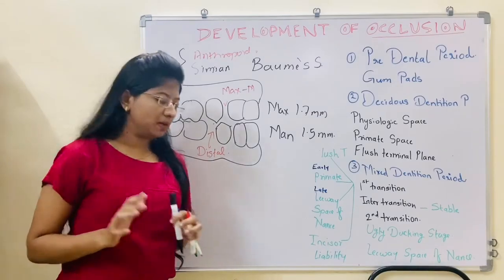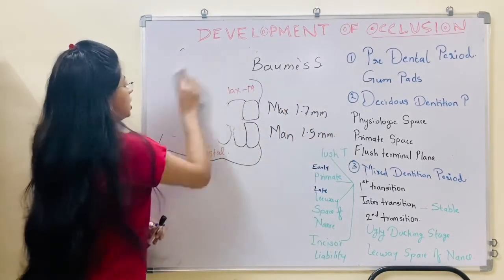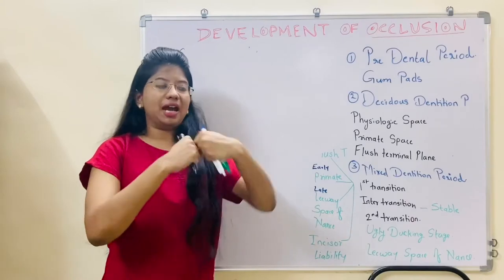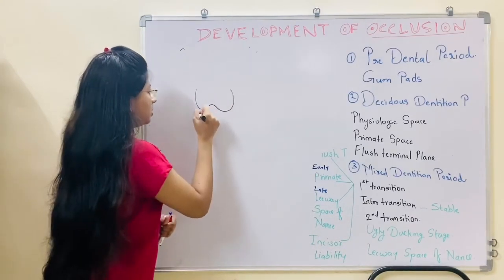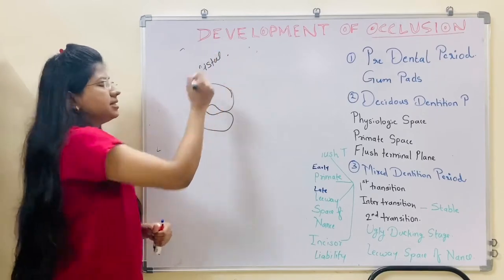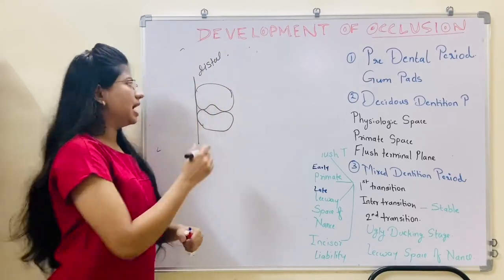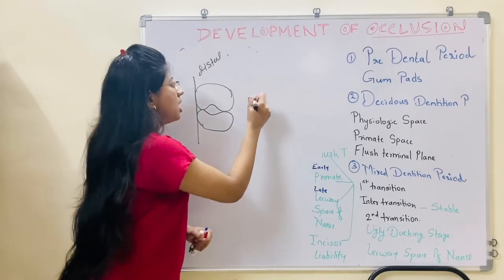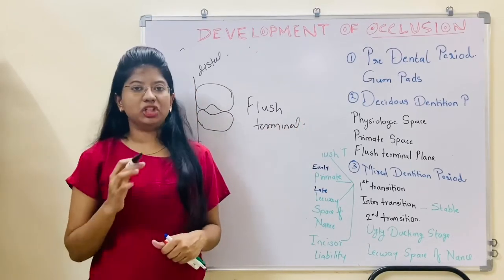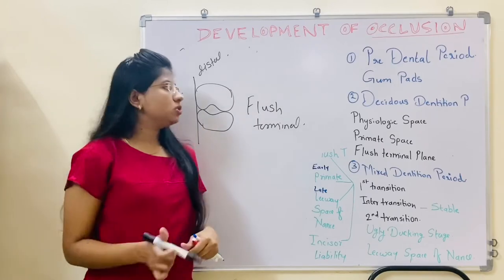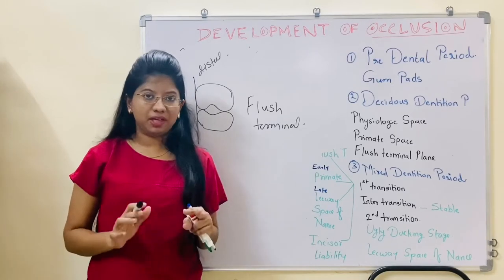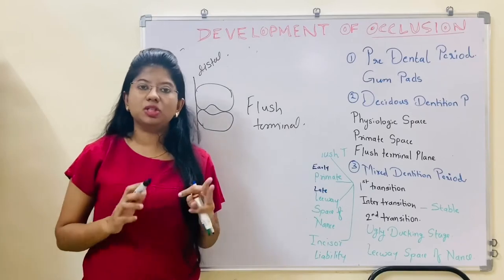Now we will see about the flush terminal plane. 'Flush' means in the same line. If the distal surfaces of both the second deciduous molars are in a single line, that is called the flush terminal plane, also known as the end-to-end relation. This physiological space, primate space, and flush terminal plane all occur during the deciduous dentition period, representing the relationship between the molars at that stage.